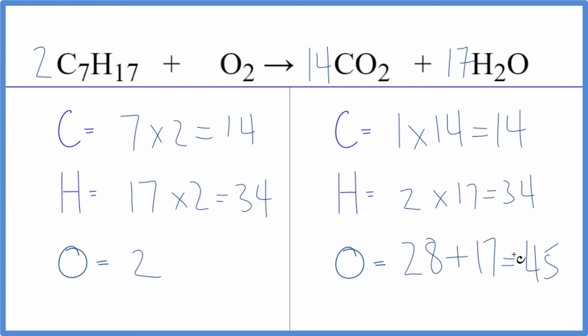But we're almost done. Because now I just need to think, how do I get 45 here? If I had 45 over 2, two times 45 over 2, that gives me 45. Let's do that. 45 over 2. The twos cancel out. I end up with 45. And this equation is now balanced.